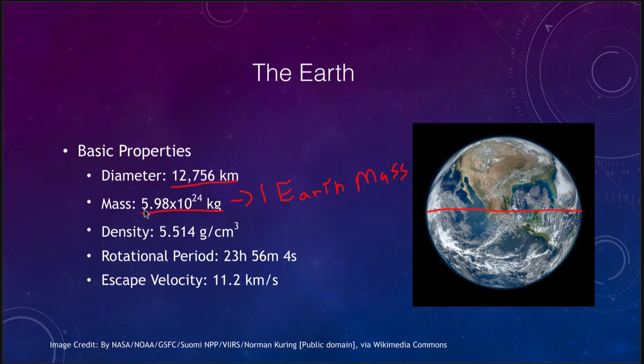This would be 6 times 10 to the 24th, would be a 6 followed by 24 zeros. That amount of material is just simply beyond our comprehension, so we compare them relative Earth masses.